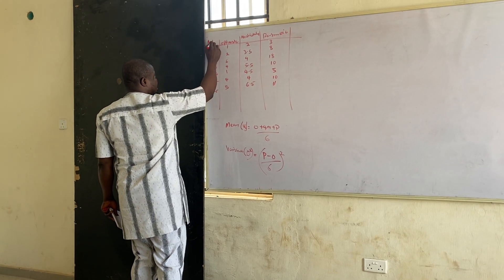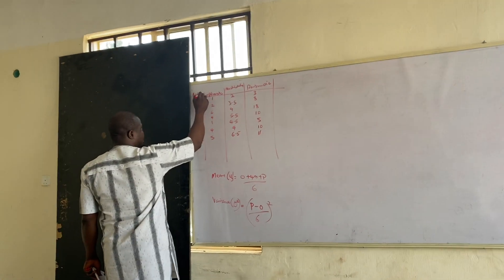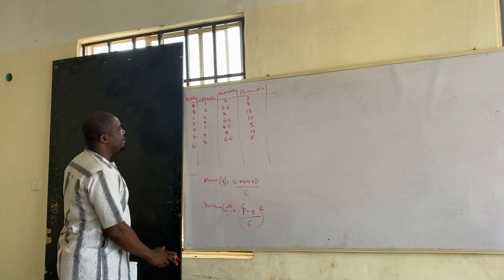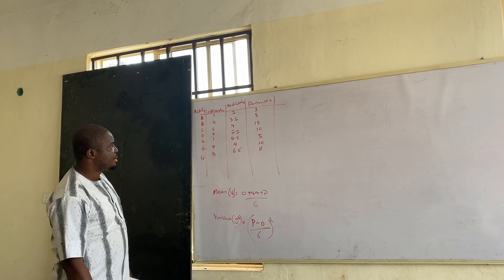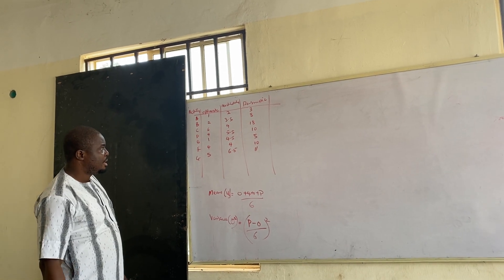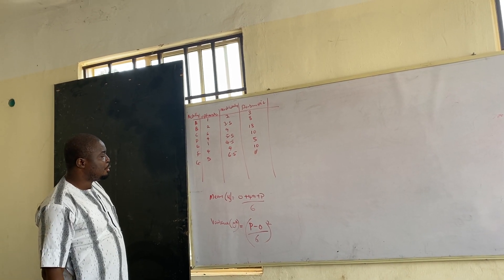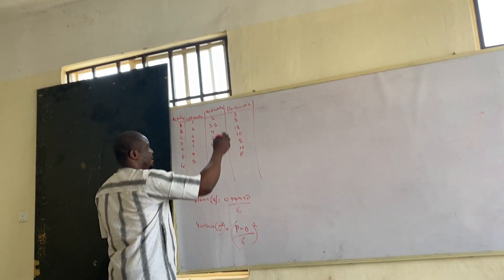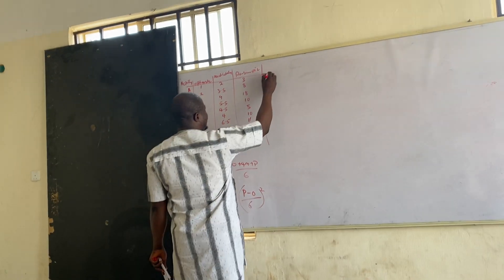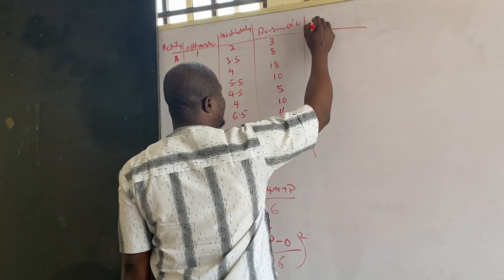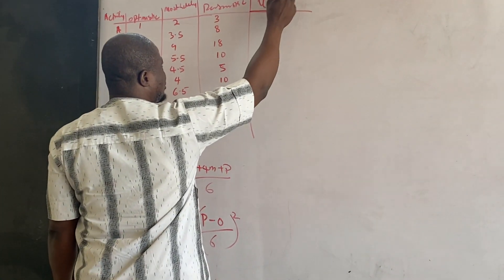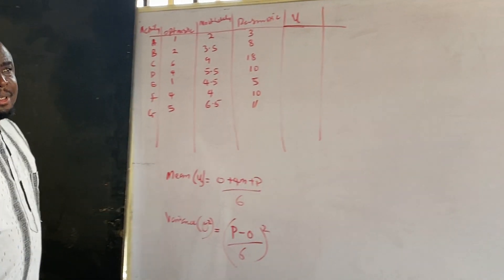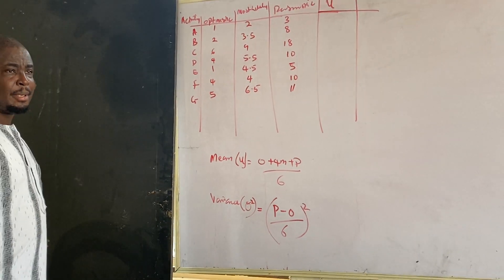This is an illustration. You discover that the time for a given activity is in optimistic, most likely, and pessimistic form. There is a need for you to determine the mean, because the mean is going to be the average that you will use in determining the critical path.